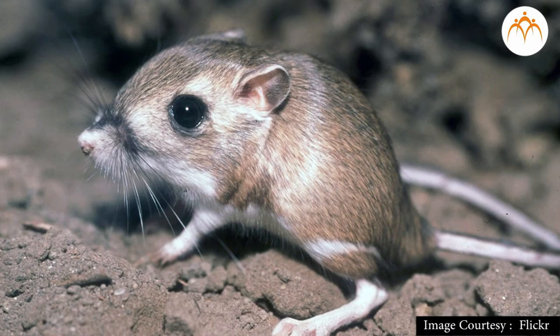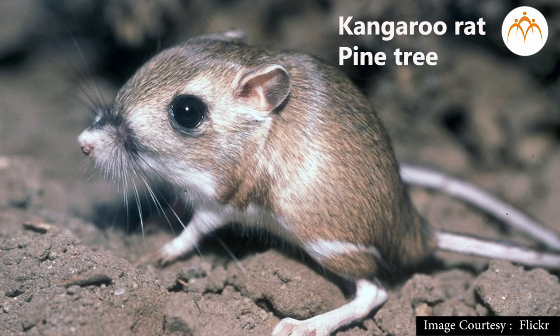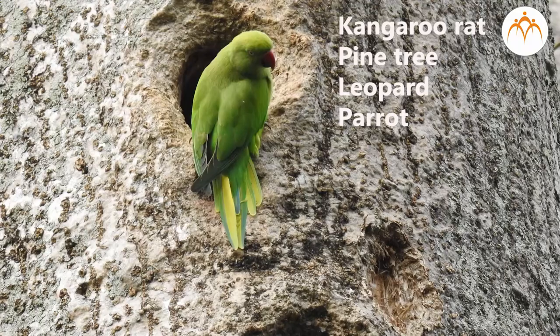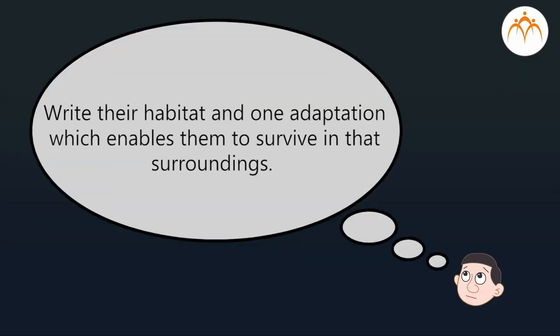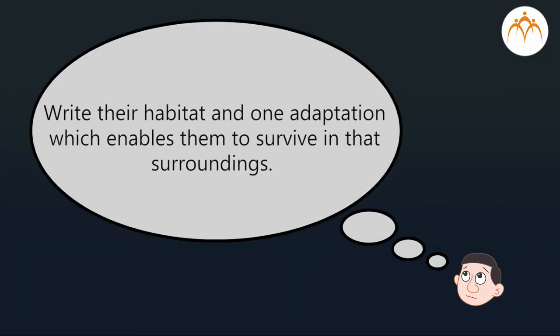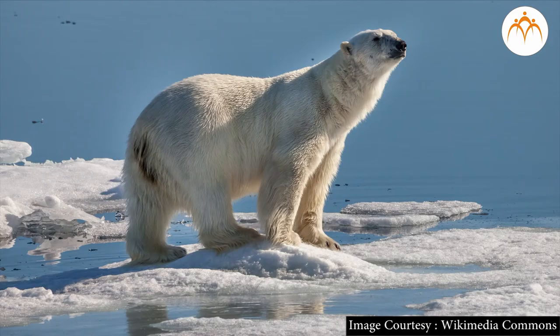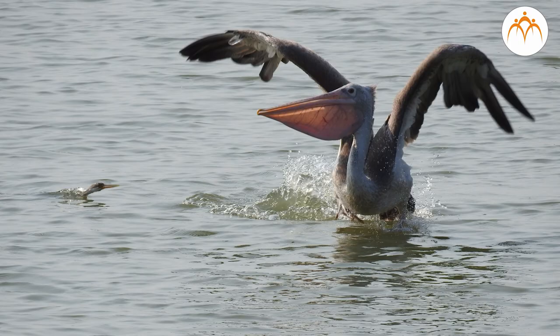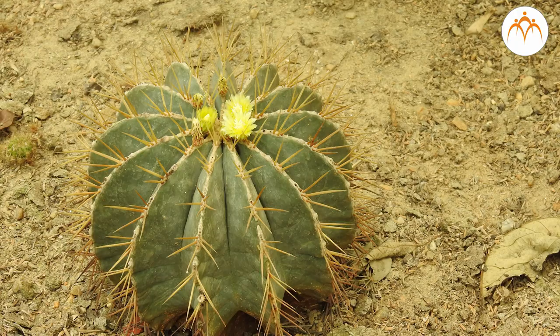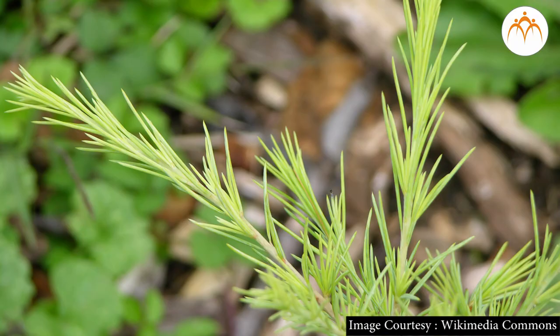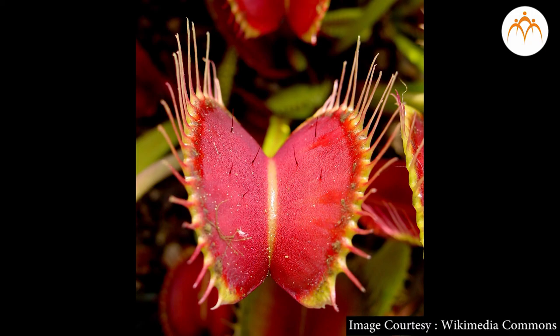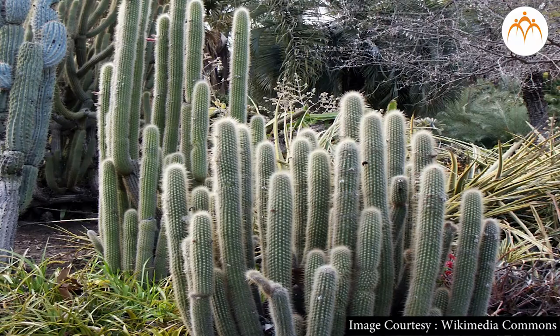Challenge for you: collect pictures of kangaroo rat, pine tree, leopard and parrot. Write their habitat and one adaptation which enables them to survive in that surrounding. Summary: in this video, we see that organisms survive in any extreme climate or adopt different ways to fulfill their needs. That is why we come across such great diversity among organisms.